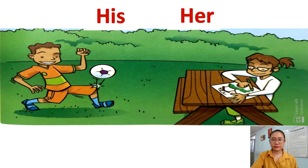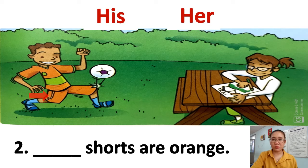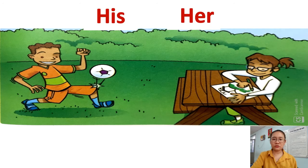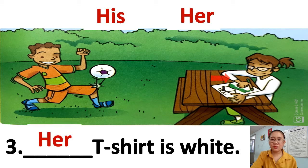Number two: socks are orange. Let's see — the orange socks belong to the boy, so we use 'his'. Number three: the T-shirt is white. Let's find the white T-shirt — it's the girl's, so we use 'her'. Good job!